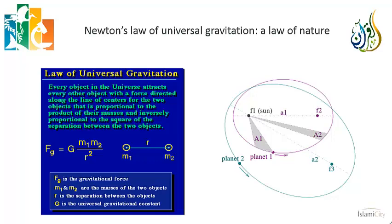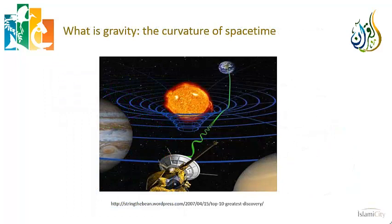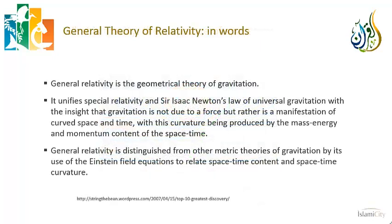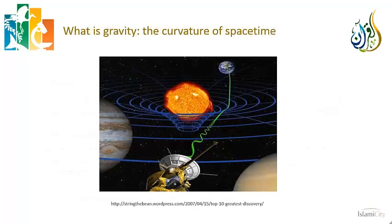It took a couple of hundred years for Albert Einstein to come along and propose an entirely new theory of gravitation. This was Einstein's general theory of relativity, and what Einstein proposed is that gravitation is not due to a force but rather it's a manifestation of curved space and time, with this curvature being produced by the mass-energy and momentum content of spacetime. What does this mean? The analogy that people usually give is to think of space as a rubber sheet. Then you take a massive body like a bowling ball and drop it in the middle of that rubber sheet—it makes that sheet curve. If you were to try to slide a marble across that rubber sheet, the marble would end up spinning around the bowling ball.